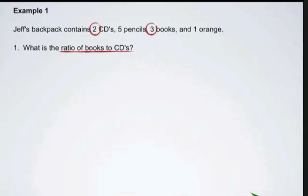As we read it from left to right, books to CDs, we'll take the number of books, which is 3, place our colon in between, followed by the number of CDs. So we've got a 3 to 2 ratio. Or, of course, we could write that in fraction format as being 3 over 2.